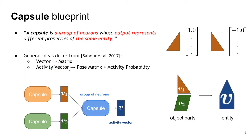The activity vector was representing the pose of the entity parts. Once you replace the vector by the matrix, you have to use a matrix and an activity probability. As we talked before, the norm or length of the activity vector represents the existence of the object. However, once you replace the vector by the matrix, you don't have this kind of property. You can define the norm of a matrix, but instead you can separate these two properties: a matrix to represent the pose, and another value called activity probability to represent the existence.